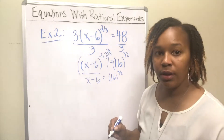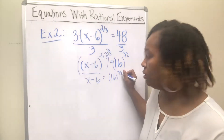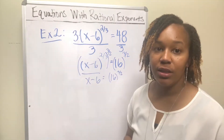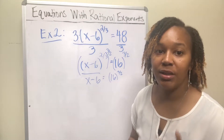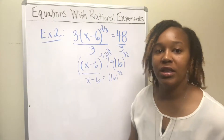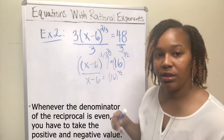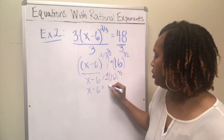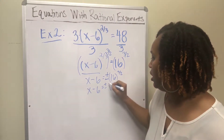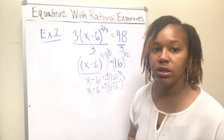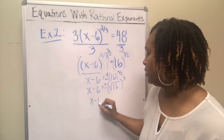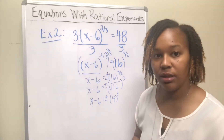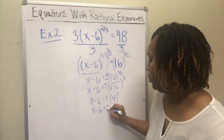Remember, the number in the denominator is the root, so this means we're taking the square root. Whenever you take the square root — or any even root — of both sides, you have to take the positive and negative of that value. Whenever the denominator is even, when you take the reciprocal, you must take the positive and negative value. So 16 to the 3/2 is the square root of 16, which is 4, raised to the 3rd power — that's plus or minus 4 to the 3rd. 4 cubed is 4 times 4 equals 16, times another 4 equals 64. So x minus 6 equals plus or minus 64.